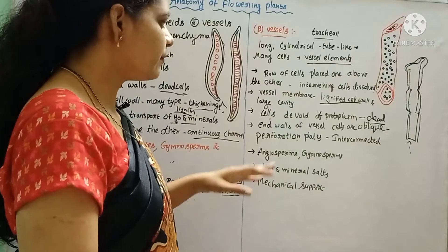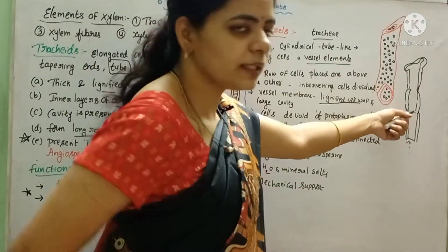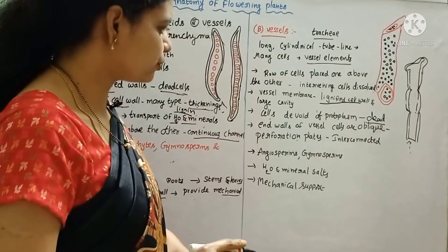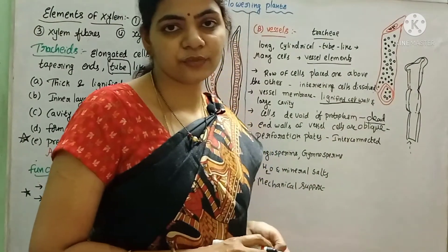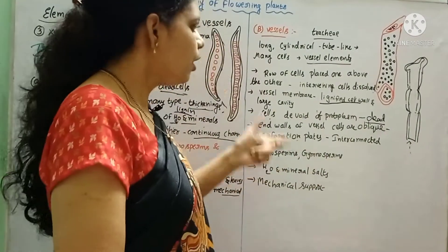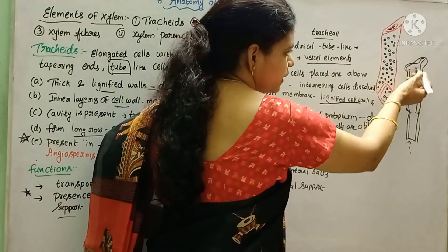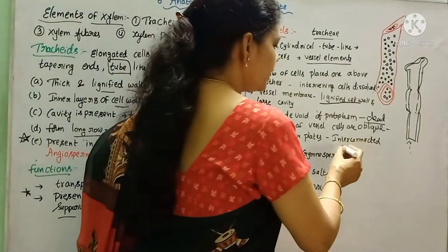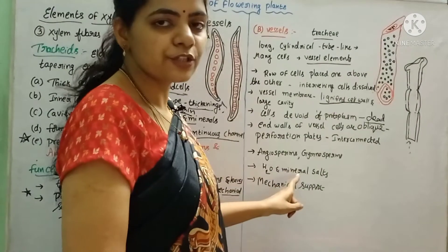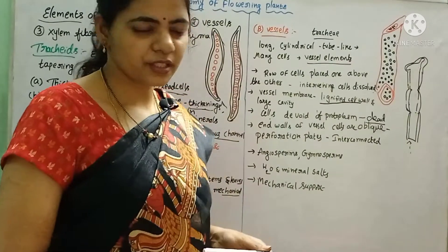Next, there are lignified cells with large cavities used to transport water and minerals. These are dead cells, as the protoplasm is lost. The only function is to transport water and minerals. Vessels have perforation plates, which are the interconnected parts. This applies to angiosperms and gymnosperms. The function includes transport of water and minerals and providing mechanical support.